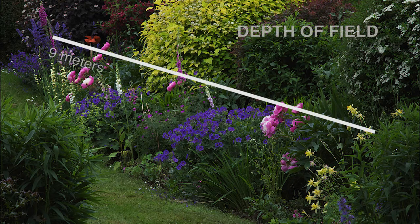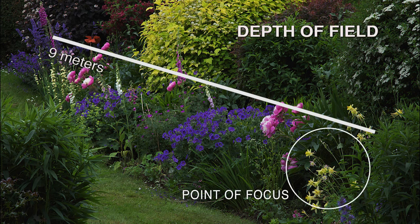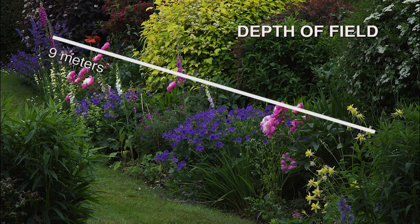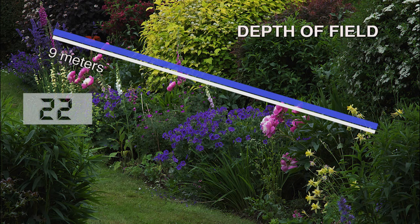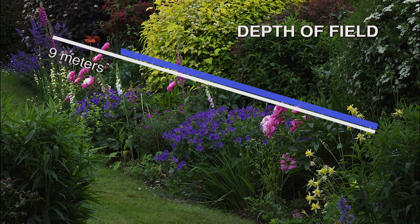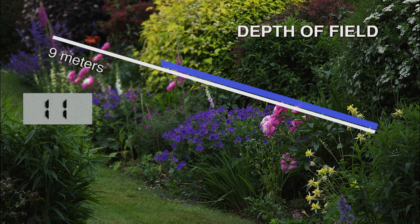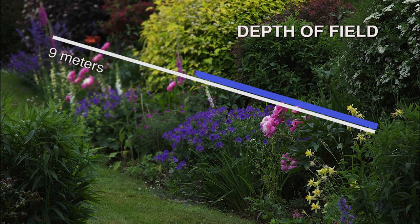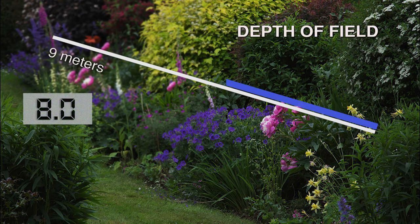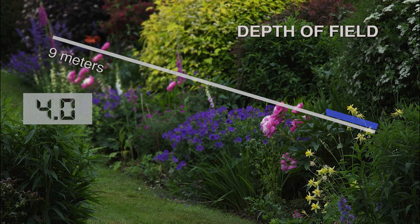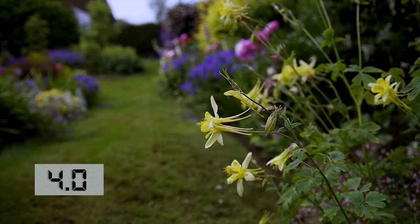Now we come to depth of field and how we can control it with f-stops. Notice the point of focus — this demonstration is across 9 meters. The first setting is at f-22, then f-11. See how the depth of field is changing as we open up the aperture: f-8, and right down to f-4. Now you can see how the shallow depth of field was achieved at f-4.